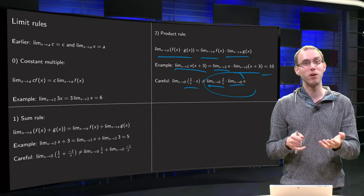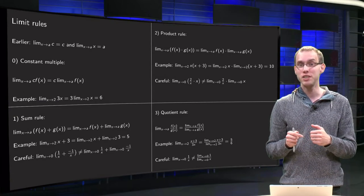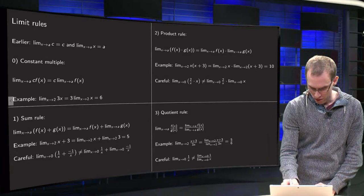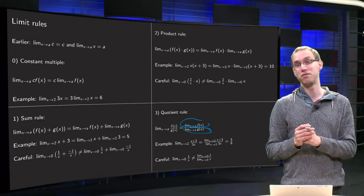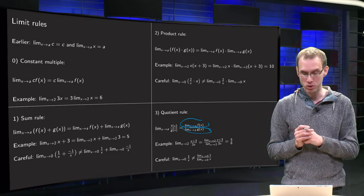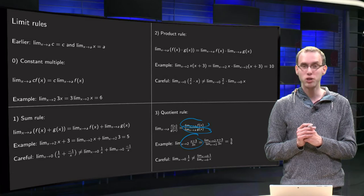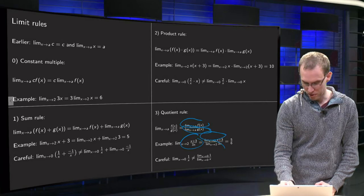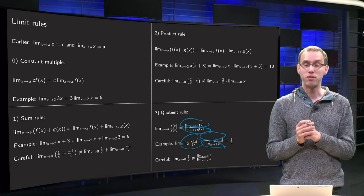Rule number 3: the quotient rule. It states that the limit of a quotient is the quotient of the limits, but with some restrictions. Those limits need to exist, just as with the sum rule and product rule, and you cannot divide by 0 — so the limit x to a of g of x is not allowed to be 0. For example, for the limit x to 2 of (x+3)/(3x), you apply the quotient rule: the limit of the numerator divided by the limit of the denominator. Both exist — they were 5 and 6 — so the limit equals 5 over 6.